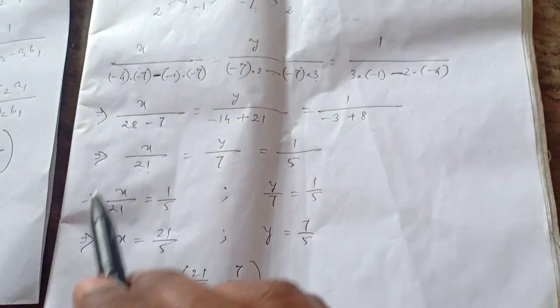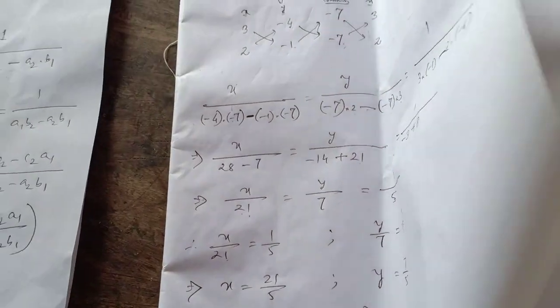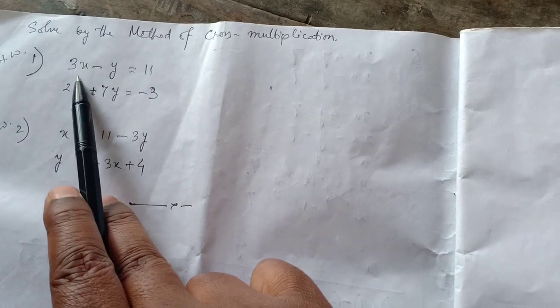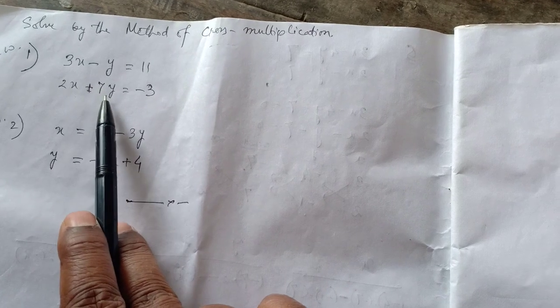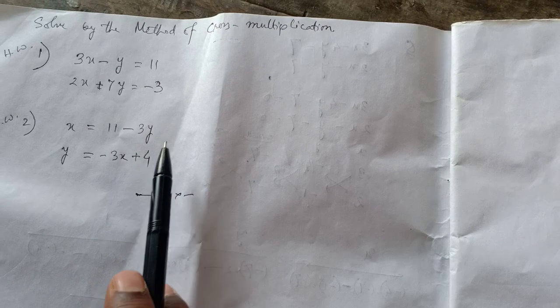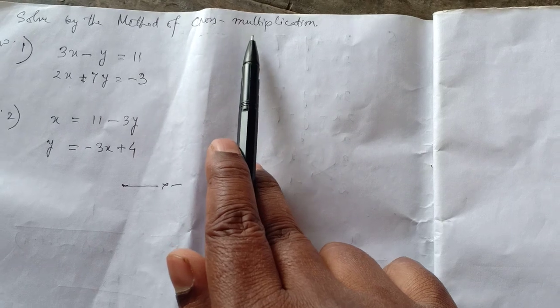Try to follow along. If you have any confusions, you may ask me. Now do one exercise — I am giving you two problems to solve by the method of cross multiplication. First: 3X minus Y equal to 11, and 2X plus 7Y equal to minus 3. Second: X equal to 11 minus 3Y, and Y equal to minus 3X plus 4. Try to solve these and submit to me.